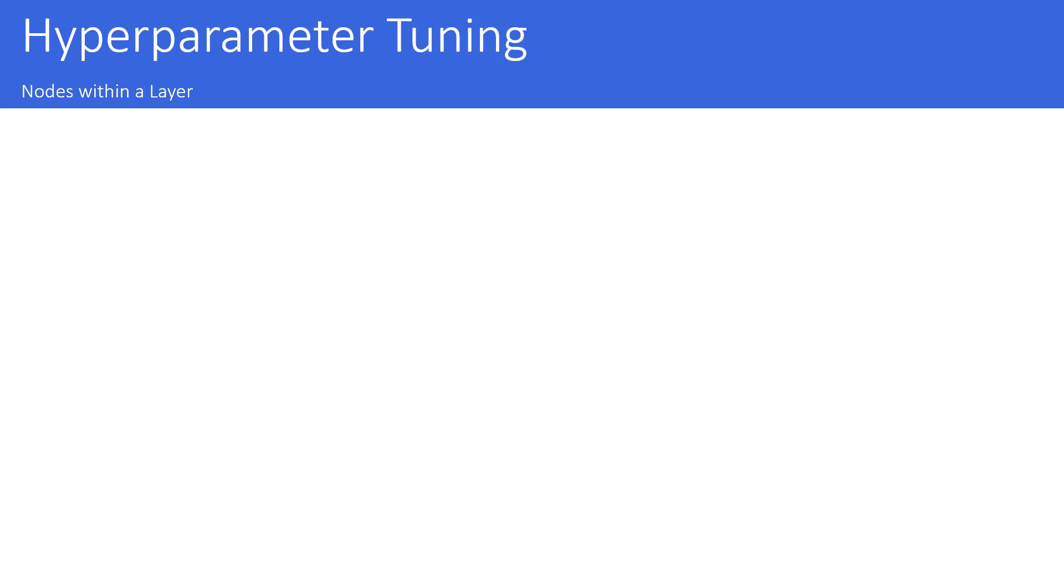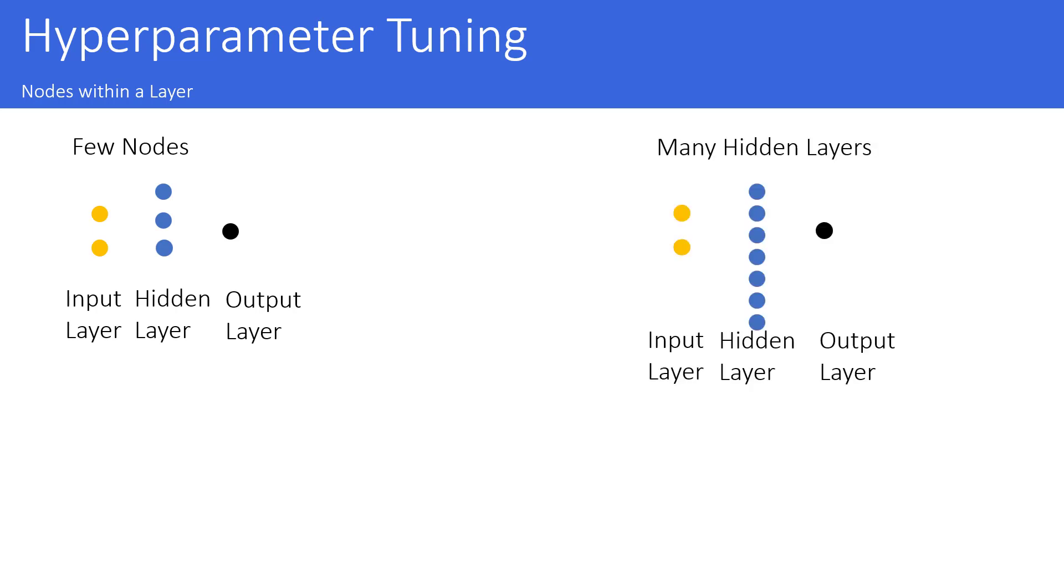The next hyperparameter I want to touch on is the nodes within a layer. You could have a hidden layer with just a few nodes. But you could also have the opposite, a hidden layer with many nodes. And it's similar to before. We have the same pattern here. If you need to have a model which is able to learn complex patterns, then it's necessary to have more nodes in your hidden layers. If you have more layers, then this is good in the case that you need to have the ability to learn complex patterns. But it has a negative impact on the training time and the inference time, because these ones are getting up. And also having fewer nodes might be beneficial because the risk of overfitting is decreased.